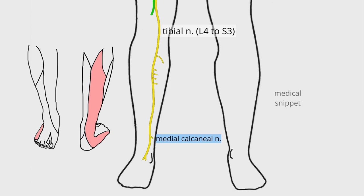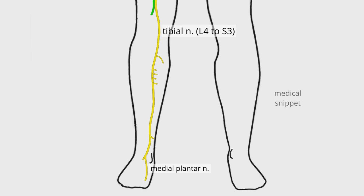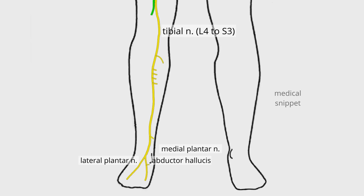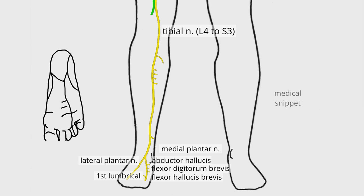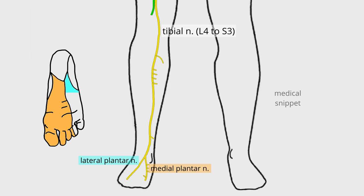It gives off a cutaneous branch in the back of the leg called the medial calcaneal nerve, which supplies the skin of the back and lower surface of the heel. In the foot, the tibial nerve terminates into medial and lateral plantar nerves. The medial plantar nerve supplies the abductor hallucis, flexor digitorum brevis, flexor hallucis brevis, and the first lumbrical. Its cutaneous distribution is the medial part of the sole and the medial three-and-a-half toes through four digital branches. The lateral plantar nerve supplies the skin of the fifth toe and lateral half of the fourth, as well as most of the deep muscles of the sole.